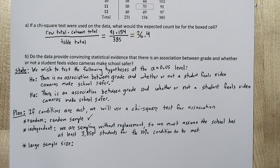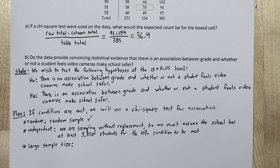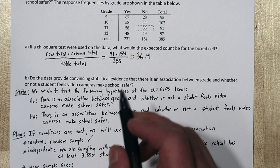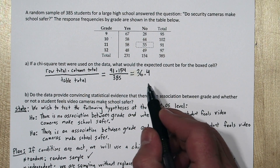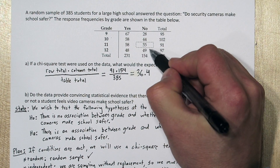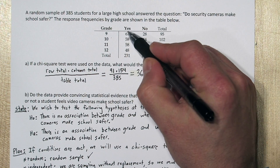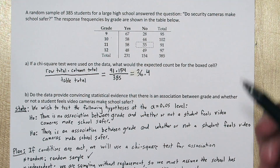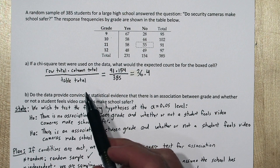The large sample size condition is the hardest to check. We need to make sure all of our expected cell counts are at least five. We already calculated the expected cell count for one cell in part A, but there are really a total of eight cells — four grades times two responses — that we'd have to apply the formula to.